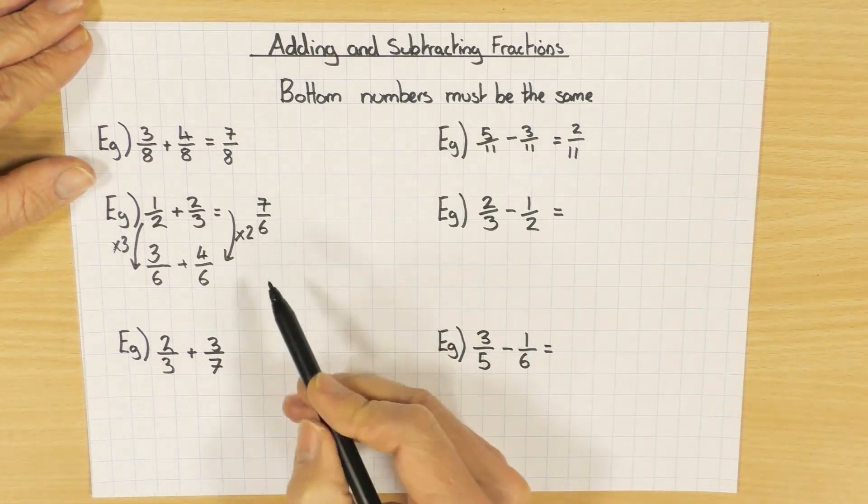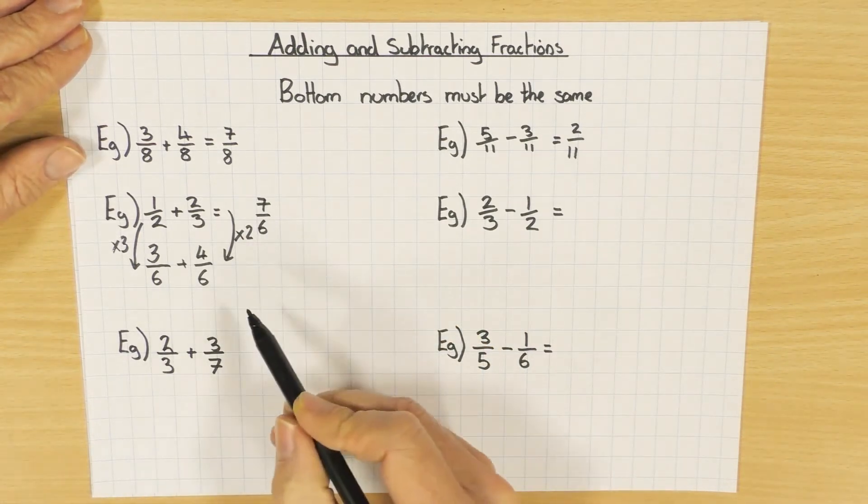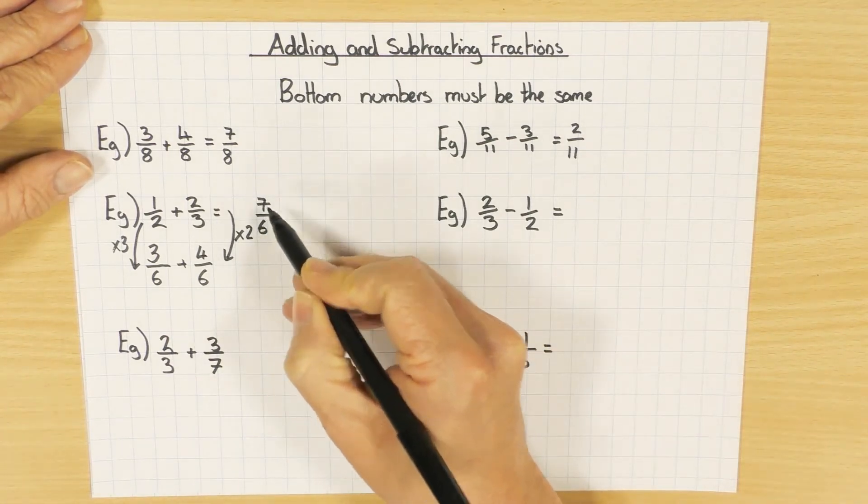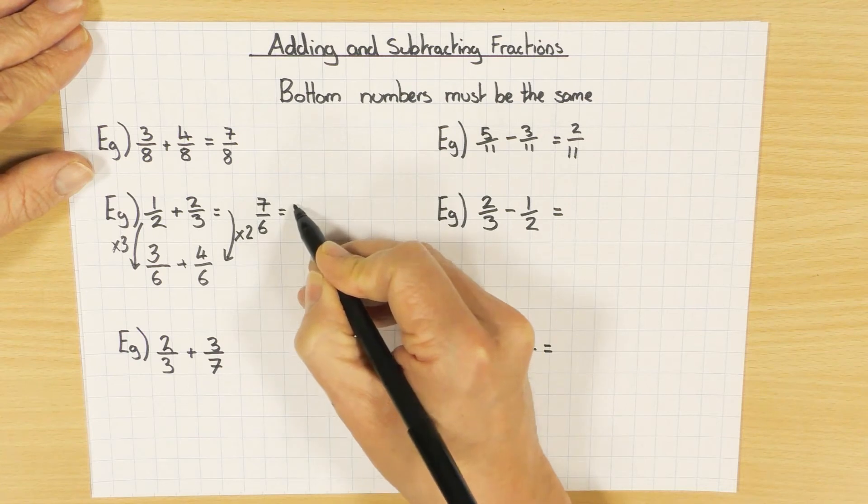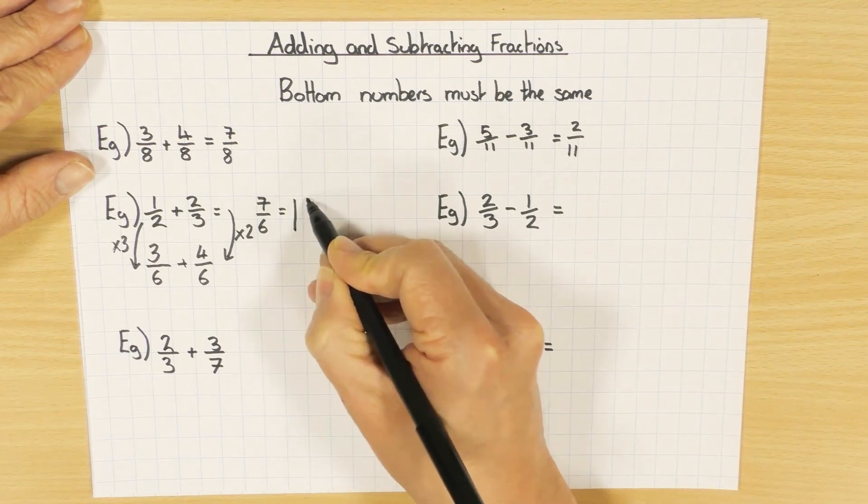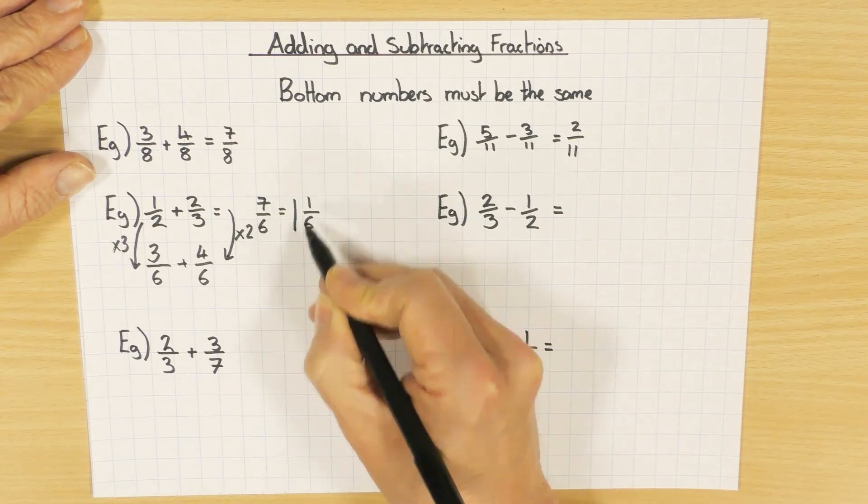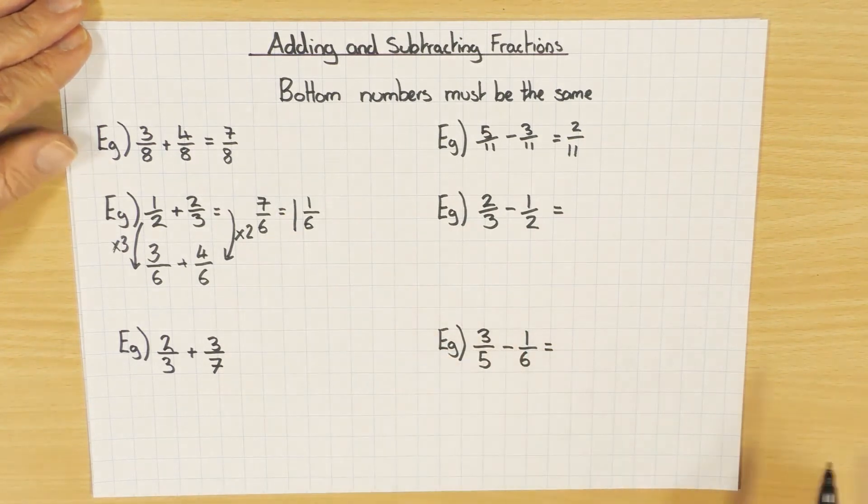It might ask you to change that answer to a mixed number. If we did, we would just say seven divided by six. How many sixes go into seven? One remainder one. So one whole one and one left over. The denominator will stay the same. One and one sixth is the same as seven over six.